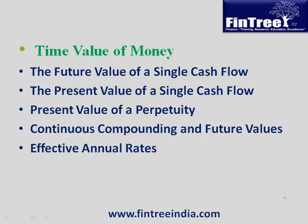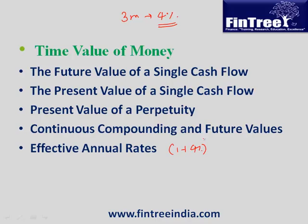Next is effective annual rate. EAR equals one plus the holding period return raised to the number of compounding periods per year. For example, a 4% return earned over three months gives EAR of 1.04 raised to the power of 12 divided by 3, which is raised to 4. For a 6-month return of 8%, EAR is 1.08 raised to 12 divided by 6.